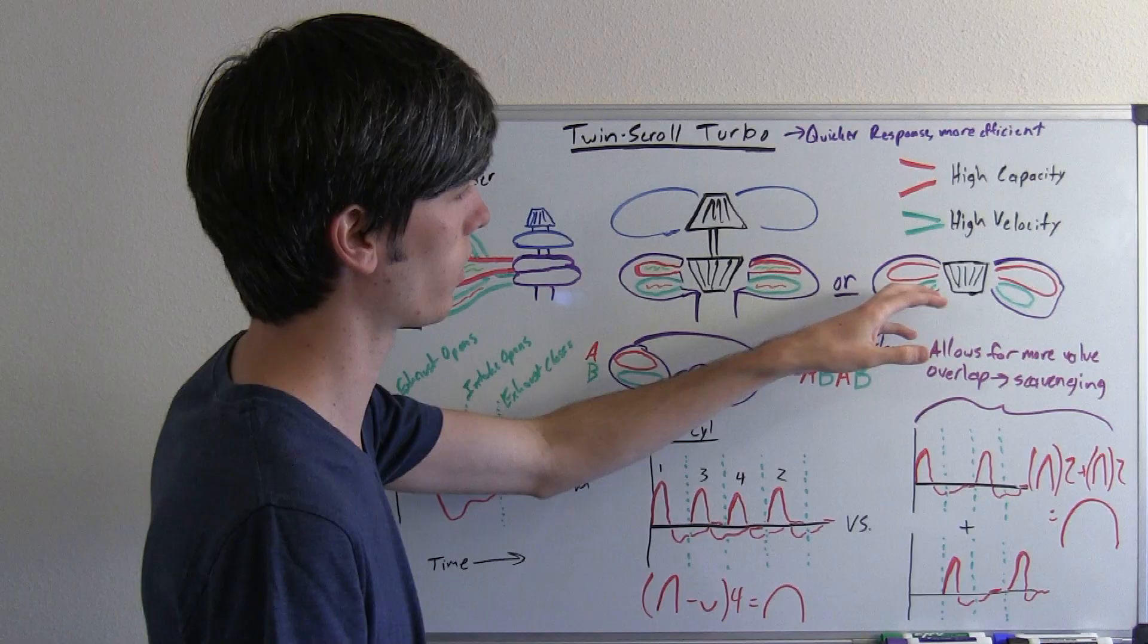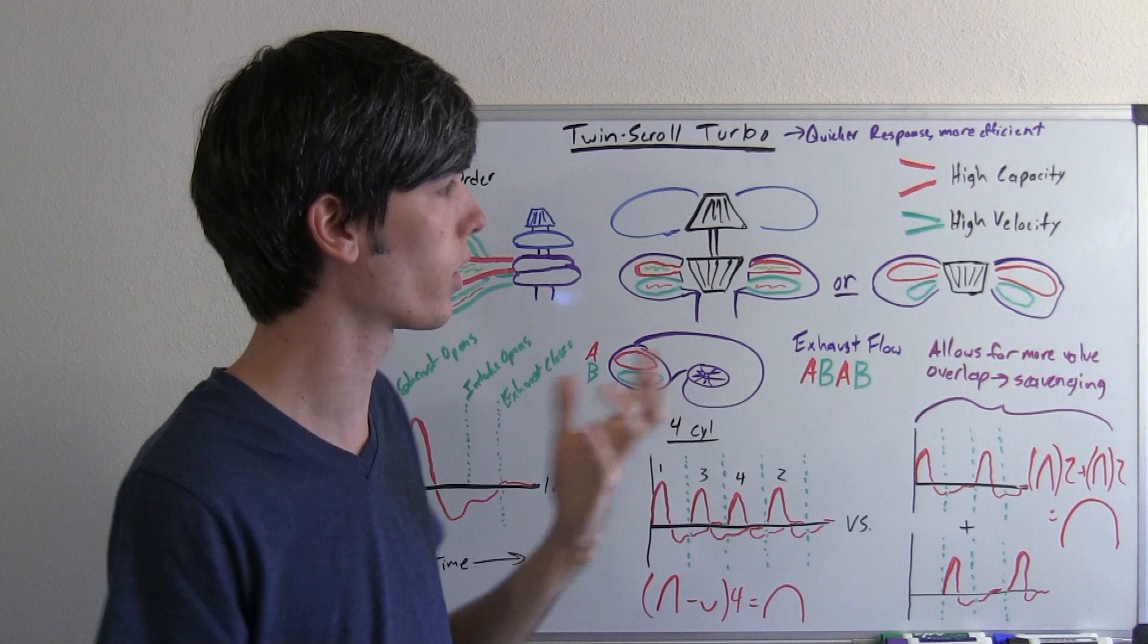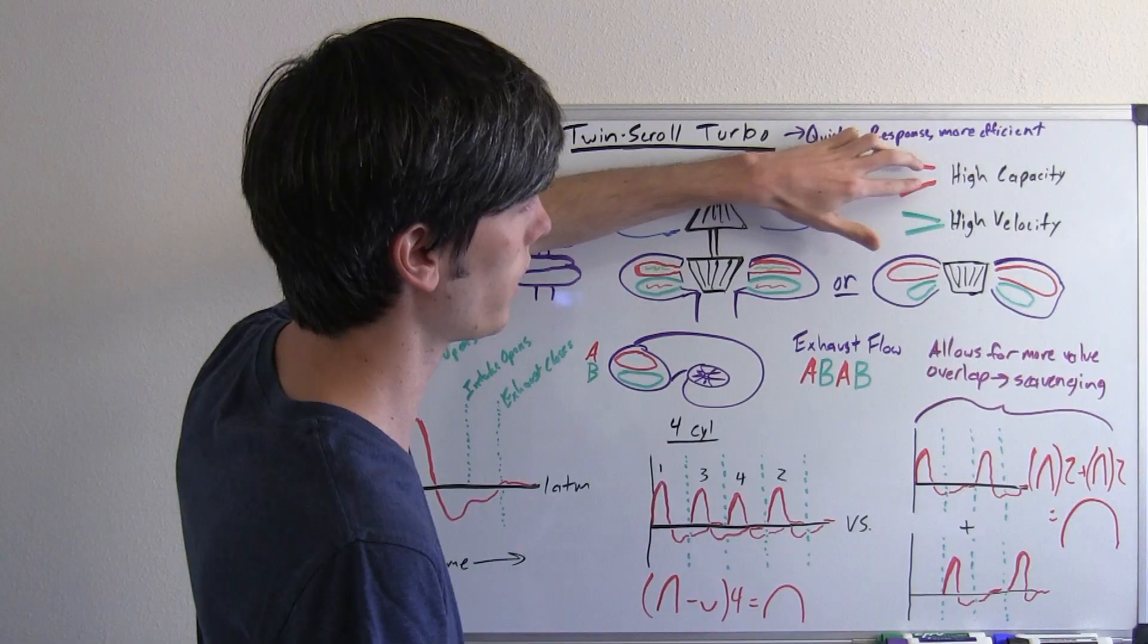So what that does is basically you're changing the AR ratio of the turbocharger and this is why I was saying you may want to watch my video on variable geometry turbochargers. I go into that in much greater detail. But basically the point is the reason why you do this is if you have a larger channel like you've got right here, this has a higher capacity, a lot more air can flow through it.